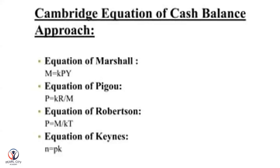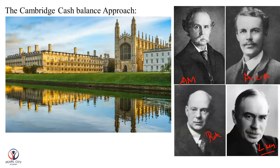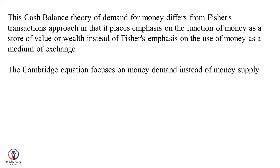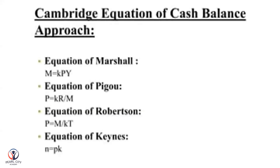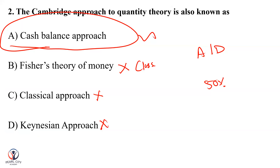This is a very important concept. In the Cambridge version, we look at the function of money, including the store of value. The Cambridge equation focuses on the money demand side instead of the money supply side — which is the classical version. So the cash balance approach, Cambridge version — the right answer is A.